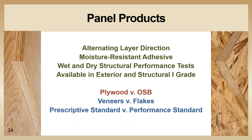Looking at oriented strand board or OSB: a lot of people don't realize that OSB has layers, just like plywood. Unlike plywood, the wood grain in any one layer is more randomized, and this slightly more random orientation actually gives OSB panels a slight edge when it comes to stiffness in-plane. Both OSB and plywood undergo structural tests in both their wet and dry conditions. Plywood typically adheres to the PS1 product standard, which is prescriptive. OSB and other wood sheathing products adhere to PS2, which is a performance standard. Some plywood is also manufactured to the PS2 standard, giving the mill a bit more flexibility in terms of raw materials.